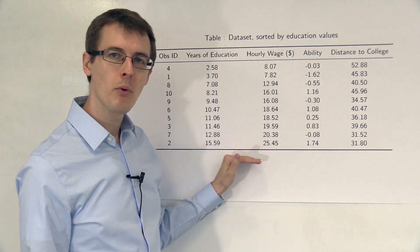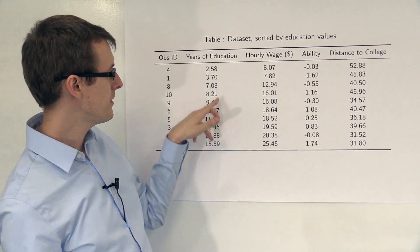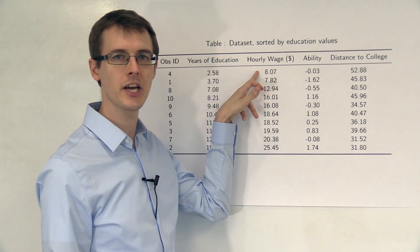Now, we see that people with more education tend to have higher wages. So this person's 25, but this person with a lot less education, only 8.